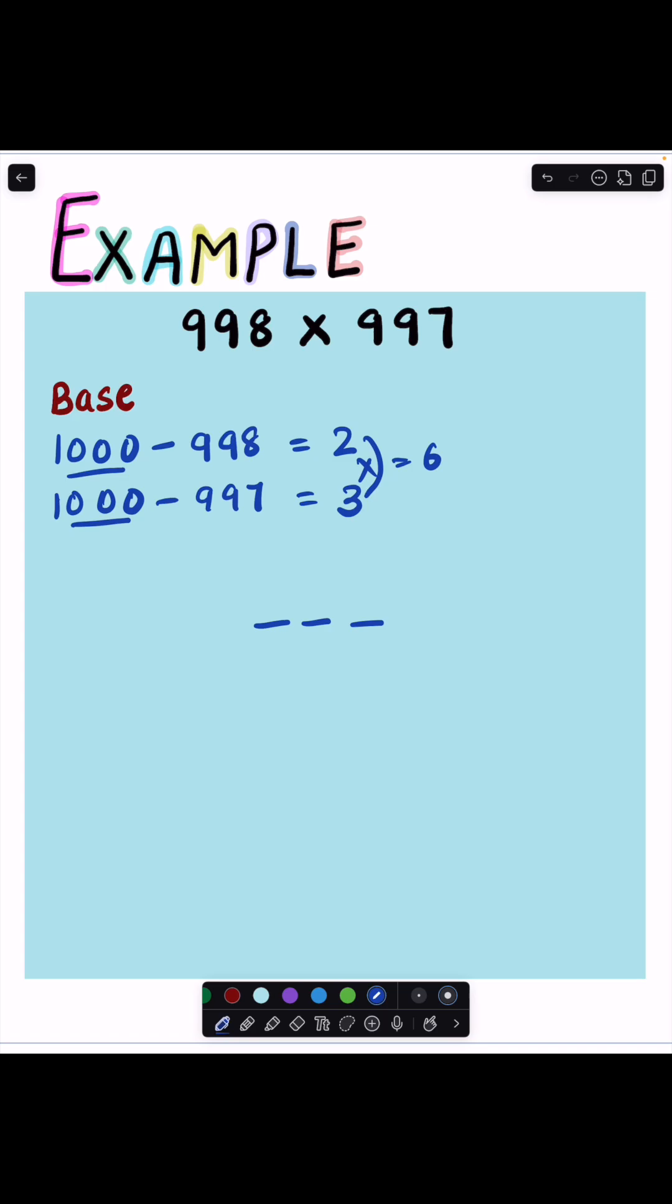Now, since we need a three-digit number for the right-hand side, we will write down two zeros in front of 6.